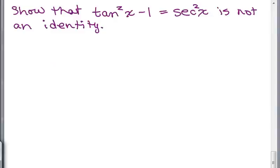Here's a trig equation. We want to show that tan²X minus 1 equals sec²X is not an identity. We're going to try to put in a value for X and show that the left-hand side is not the same as the right-hand side.